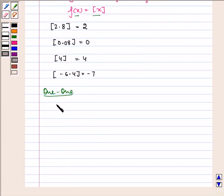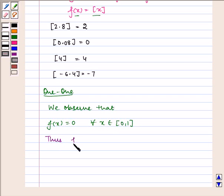We observe that f(x) = 0 for all x belonging to the closed interval [0,1]. Thus, f: R → R is not one-one.